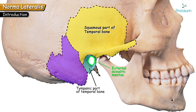Behind the external acoustic meatus, that is posterior to the ear, the blunt projection seen here is the mastoid process. The mastoid is the blunt projection present posterior to the external acoustic meatus. Inferiorly, the temporal bone is identified by a slender sharp projection called the styloid process, or styloid part of the temporal bone. These are the few parts of the temporal bone we can appreciate in Norma lateralis.